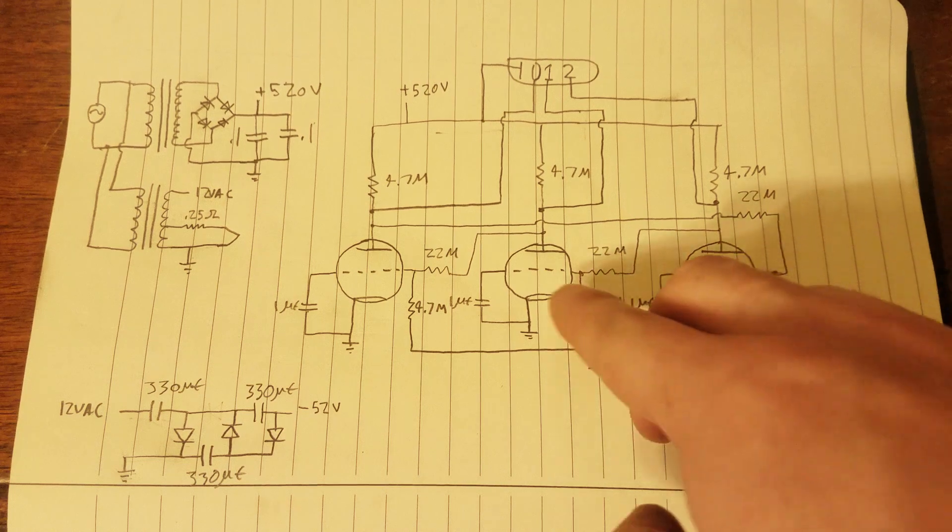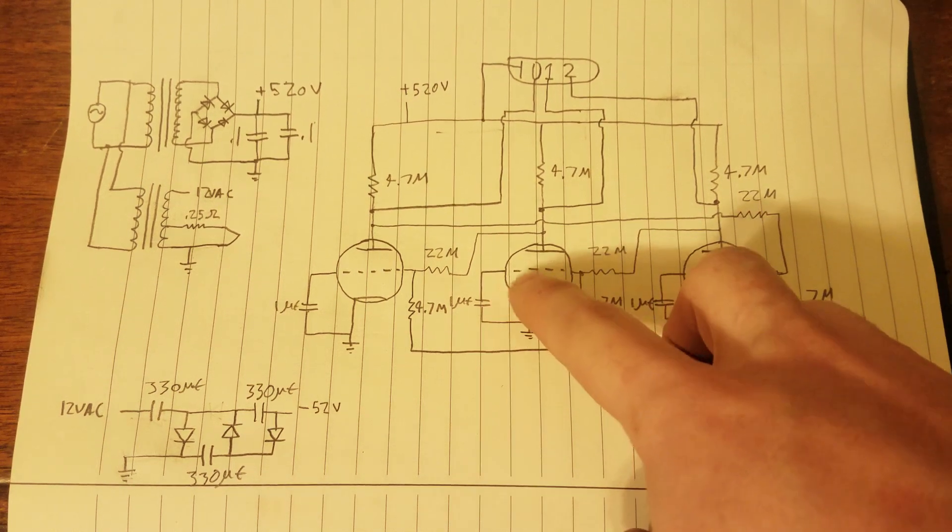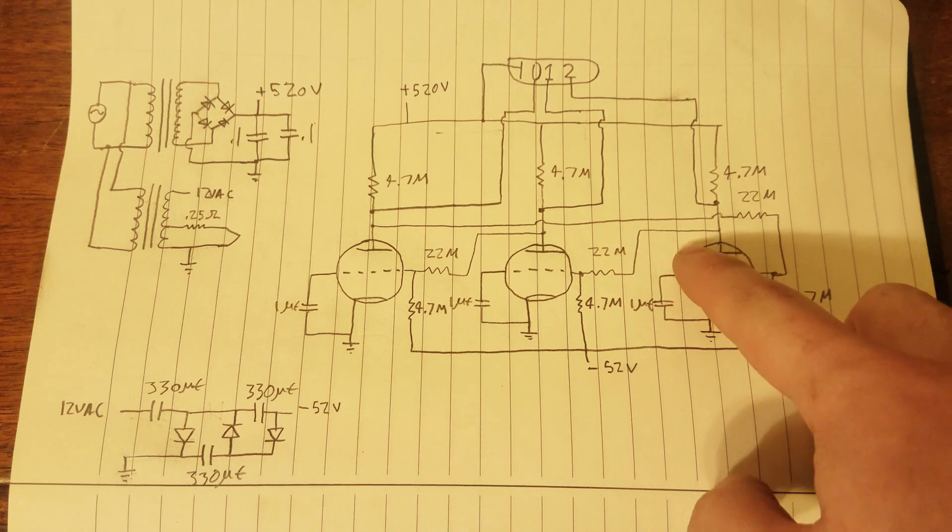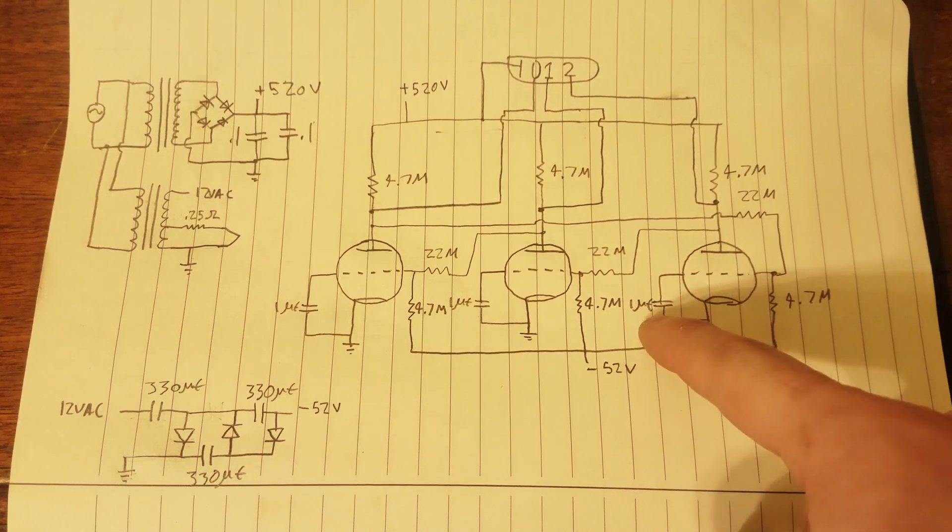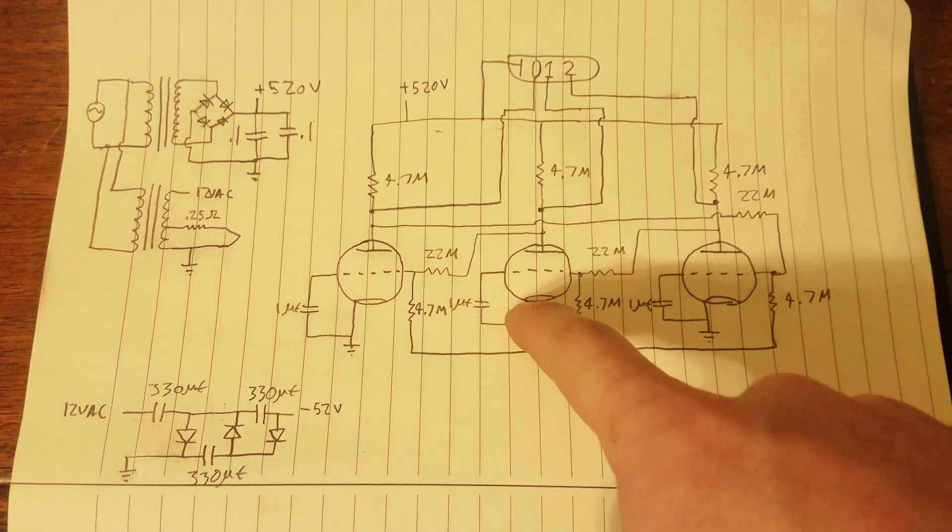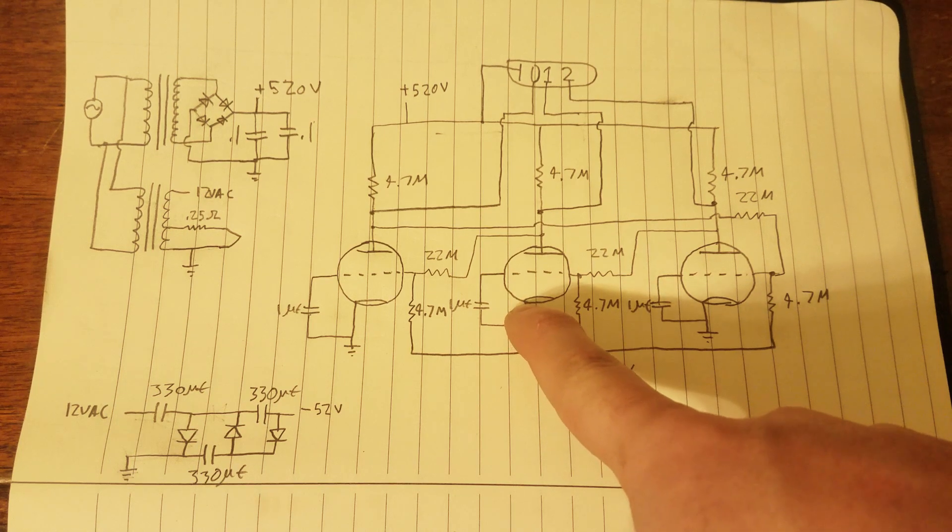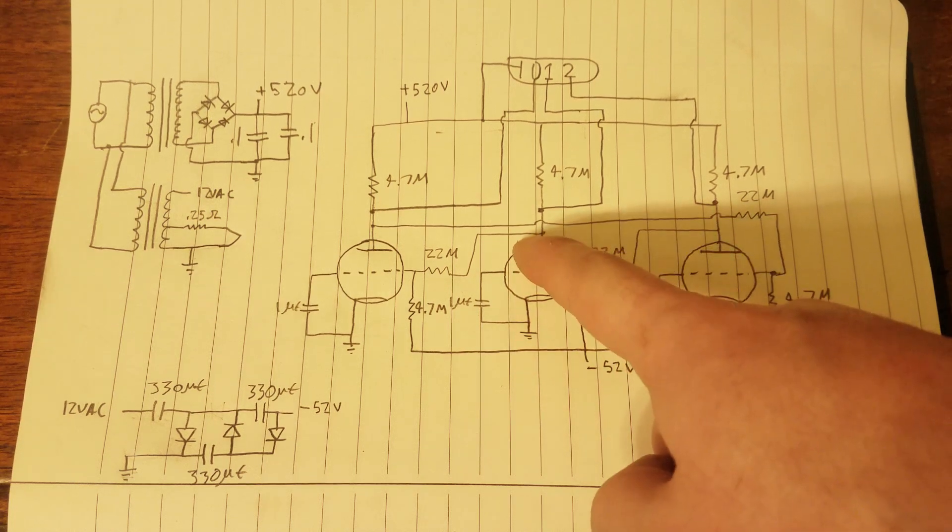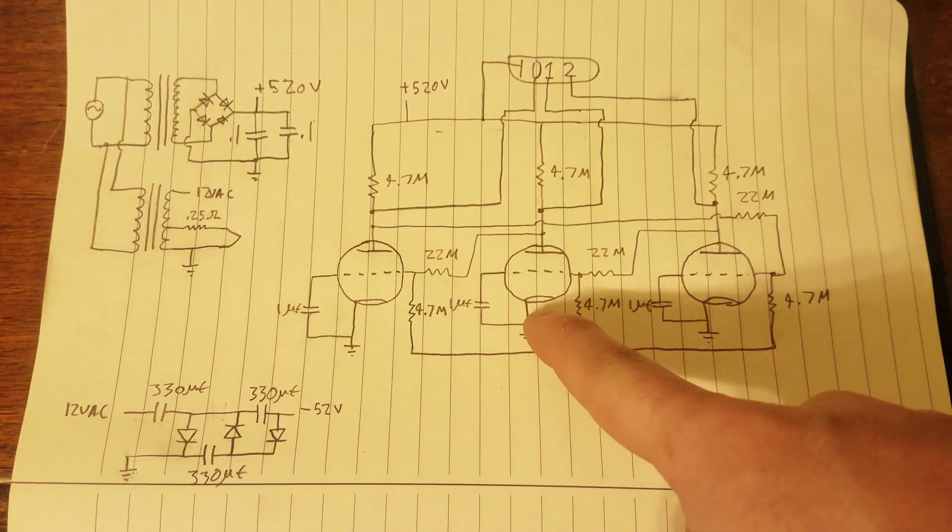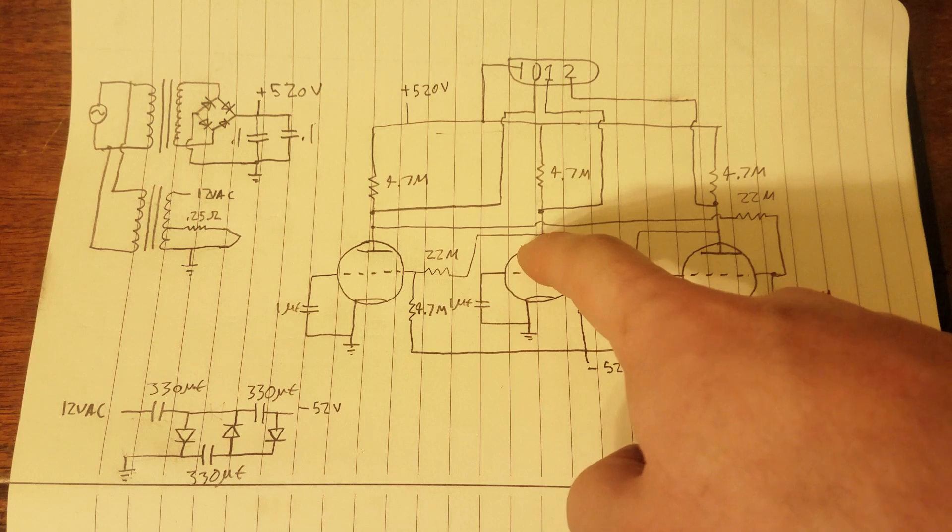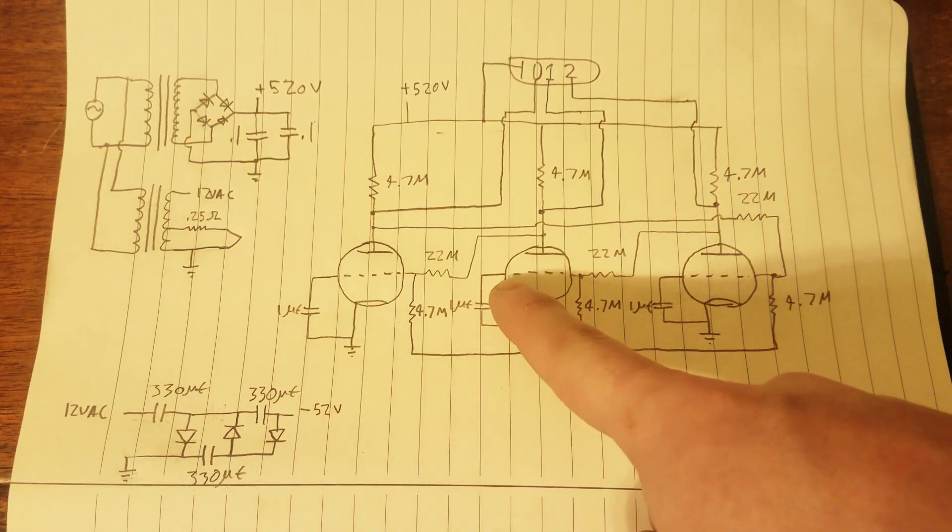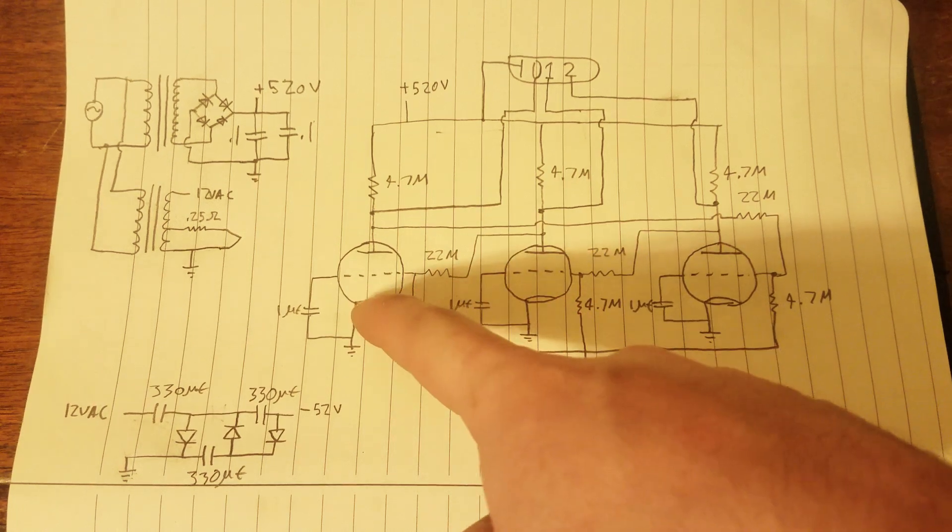So as this is happening, this tube is starting to be turned on more and more by this one. And just as this one starts to discharge this capacitor through here, this tube is turned on fully. And then what will happen is that the plate of this tube will be pulled low. And it will start to turn this point right here positive. And it will start to turn this tube on.